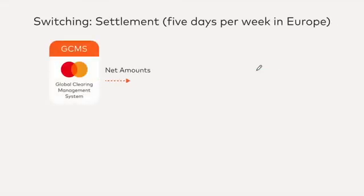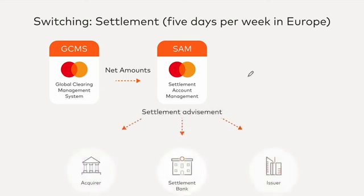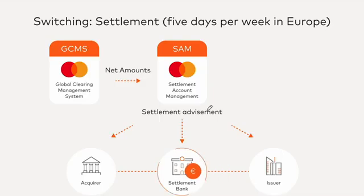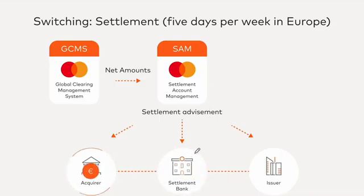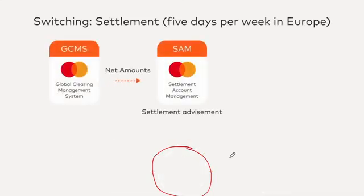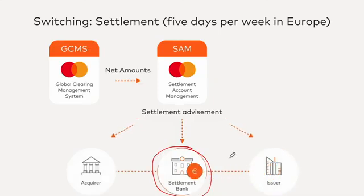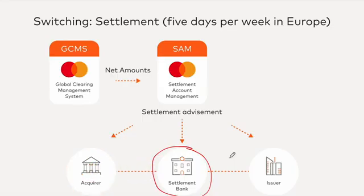The final settlement process involves a settlement advertisement informing parties of the settlement details. There is also a settlement bank — an intermediary bank where the amount is transferred from the issuer to the settlement bank and finally to the acquirer.